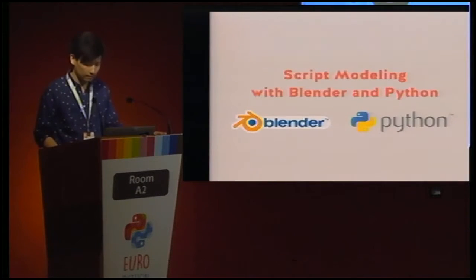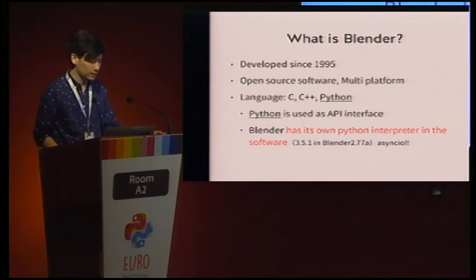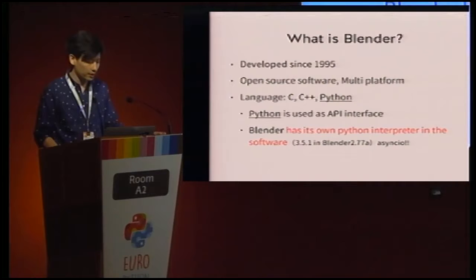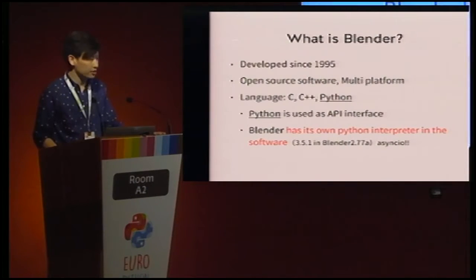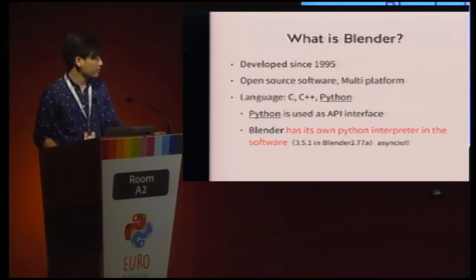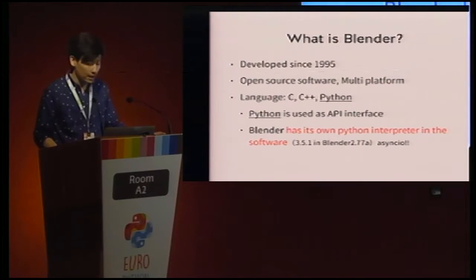Let's start with Blender. What is Blender? Blender has been developed since 1995, so it's a little younger than Python. It's open source and multi-platform: Windows, Mac, and Linux. It's developed in C, C++, and Python, with Python used as the API interface. Blender has its own Python interpreter built in. The latest version of Blender is 2.77, which includes Python 3.5.1, so you can even use asyncio in your scripts.